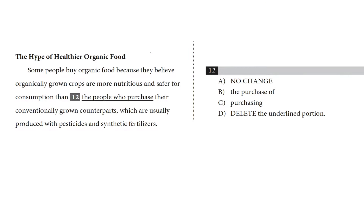We're looking at question 12 from a passage titled 'The Hype of Organic, Healthier Food.' Some people buy organic food because they believe organically grown crops are more nutritious and safer for consumption than the people who purchase their conventionally grown counterparts, which are usually produced with pesticides and synthetic fertilizers.